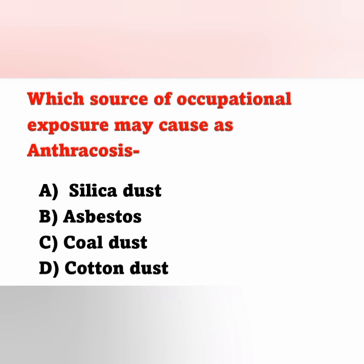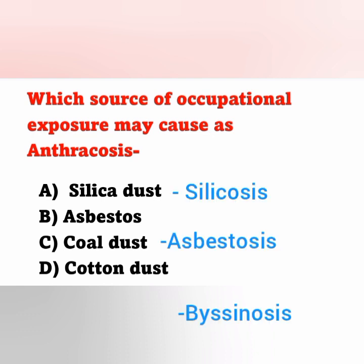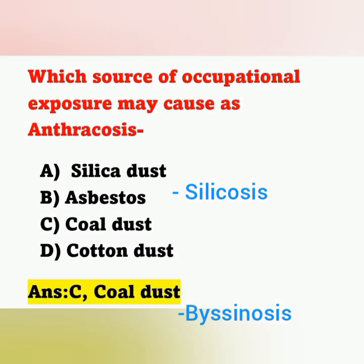Question: Which source of occupational exposure may cause anthracosis? Options: option A silica dust, option B asbestos, option C coal dust, option D cotton dust. Occupational exposure to silica dust may cause silicosis, exposure to asbestos may cause asbestosis, and exposure to cotton dust may cause byssinosis. Occupational exposure to coal dust may cause anthracosis. Option C is the correct answer.